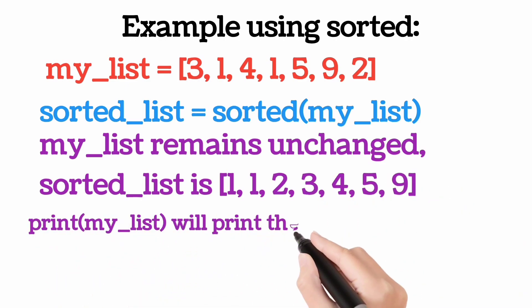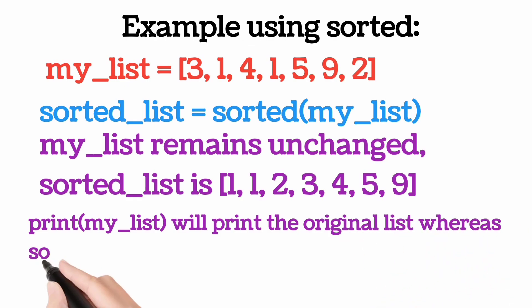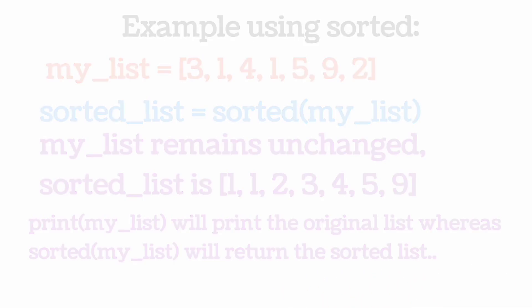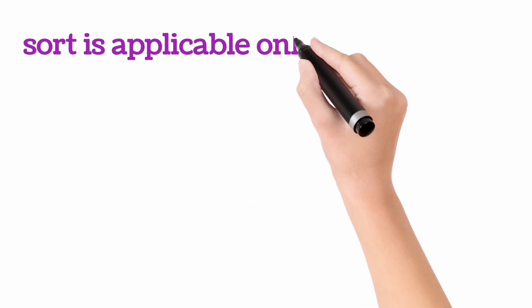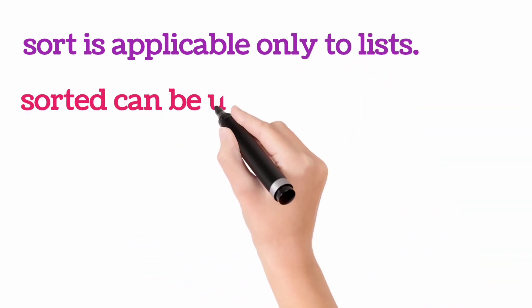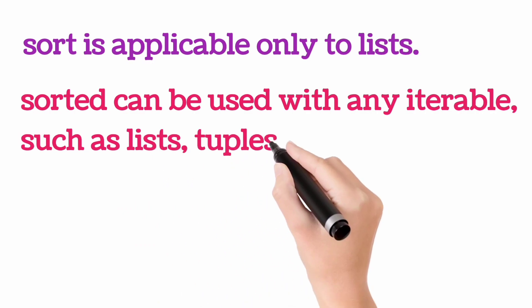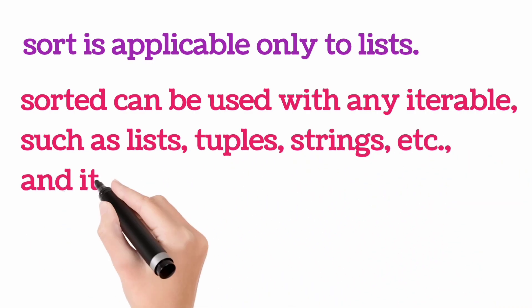Print(my_list) will print the original list whereas sorted(my_list) will return the sorted list. Sort is applicable only to lists. Sorted can be used with any iterable, such as lists, tuples, strings, etc., and it always returns a new sorted list.